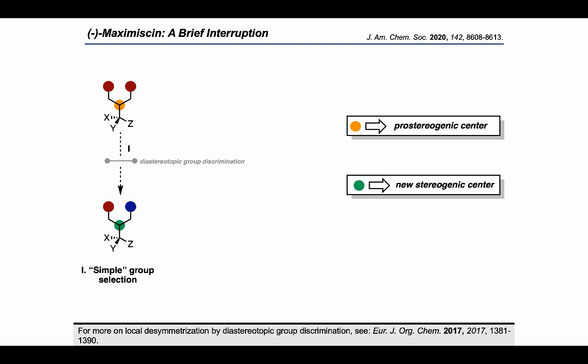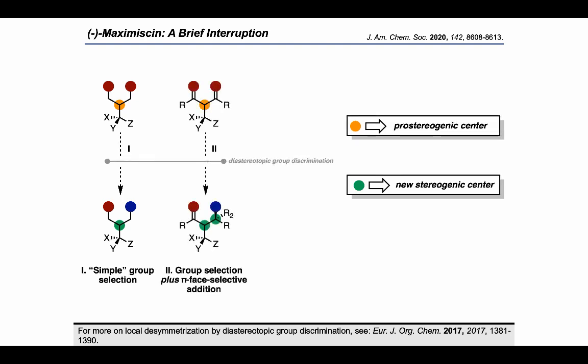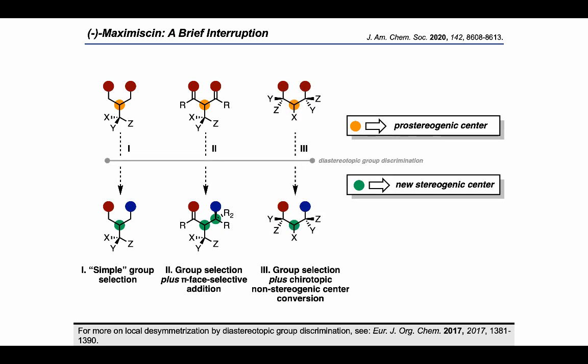In order to put this total synthesis in context, let's look at some categories proposed for local desymmetrization, marking pro-stereogenic centers in orange and new stereogenic centers in green. In a category 1 local desymmetrization — simple group selection — the diastereotopic group discrimination results in formation of a single stereocenter by altering the identity of one diastereotopic group. In category 2, the group selection is accompanied by addition to an unsaturated functional group, setting more stereocenters. In category 3, the diastereotopic group discrimination is accompanied by conversion of a chirotopic non-stereogenic center to a stereocenter — the category that Barron's C–H methoxylation in the maximycin synthesis falls into.